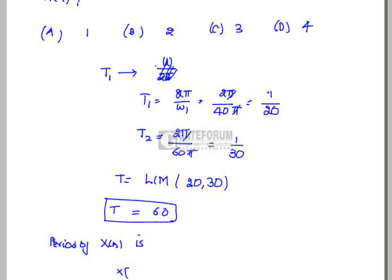The discrete-time signal x(n) = 2cos(40π/75 · n) + sin(60π/75 · n). We now find the discrete periods N1 and N2 for each component.